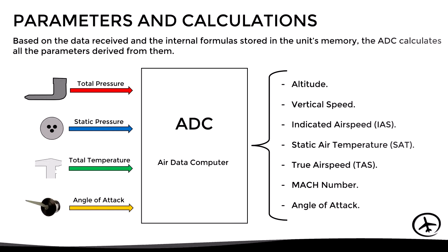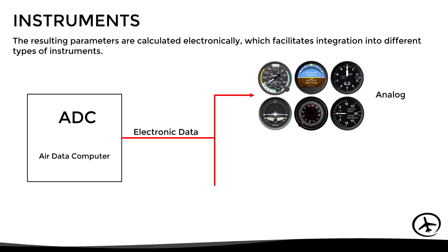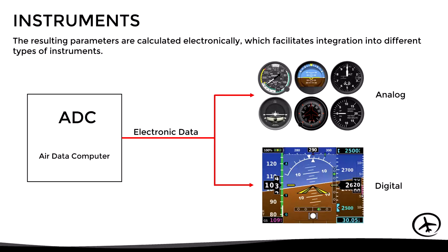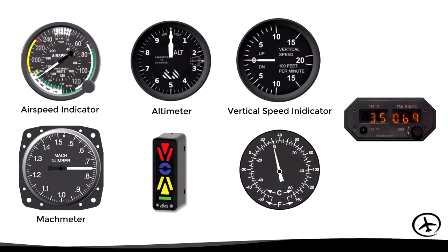The resulting parameters are calculated electronically by the microprocessor, which facilitates integration into different types of instruments. These data can be sent to analog instruments adapted to receive electronic inputs, or to electronic flight instrument systems with digital presentations. The instruments normally fed by the ADC are the airspeed indicator, altimeter, vertical speed indicator, Mach meter, angle of attack indicator, outside air temperature indicator, and in some cases the true airspeed and total air temperature indicator.